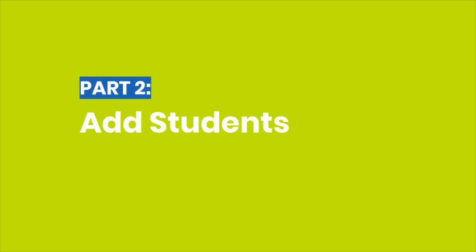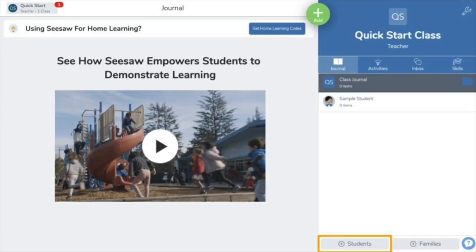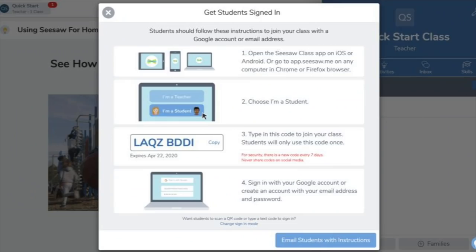Let's add your students. If you created your class by importing a roster from Google Classroom, you can skip this step — your students are already added and ready to log in. Click the 'Plus Students' button. If your students have ready access to email addresses or Google accounts, they can use them to sign in to Seesaw. When prompted, if you want students to sign in with their email address or Google account, choose 'Yes.'